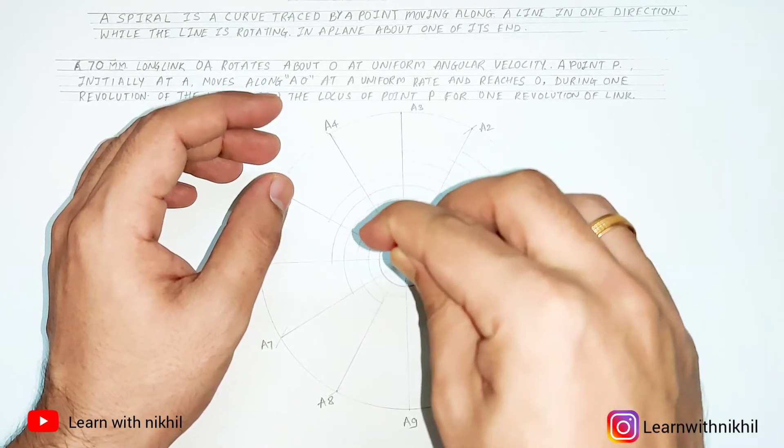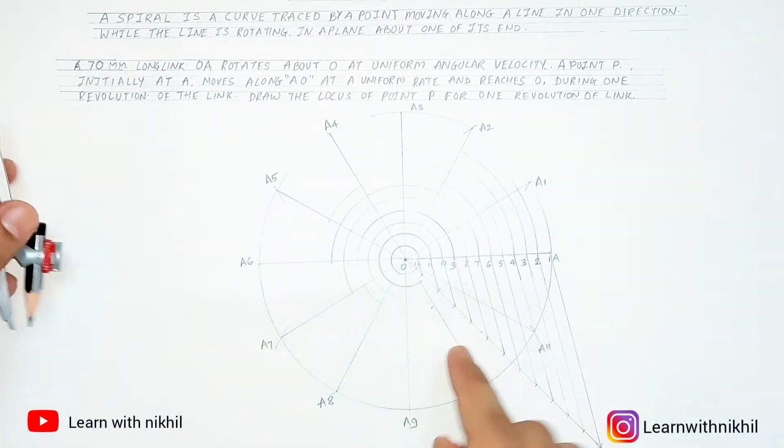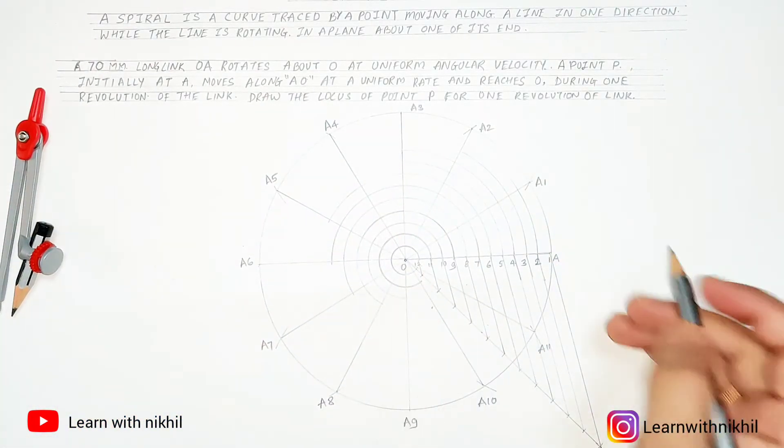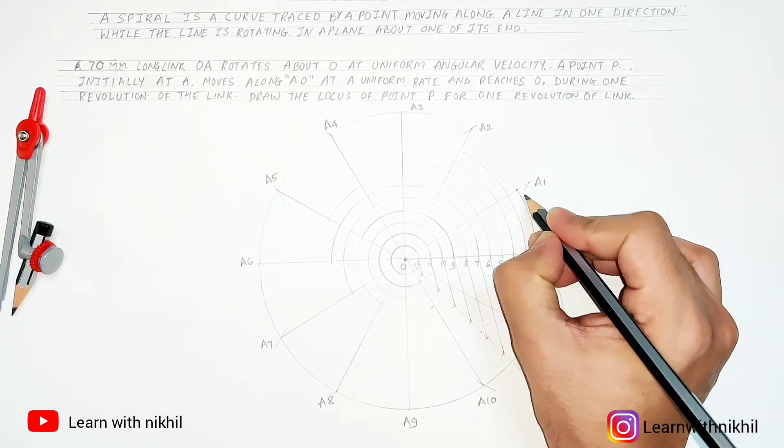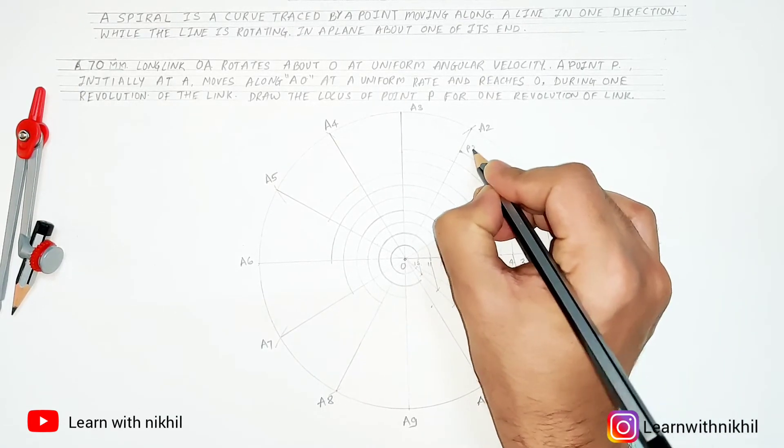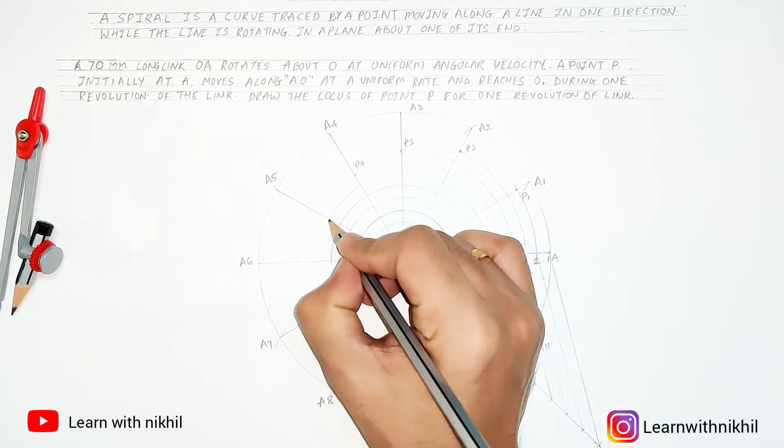You have to mark those intersecting points and name them as P1 to P12. So this first point I'll mark it as P1, then the second point I'll mark it as P2, P3, till P12.